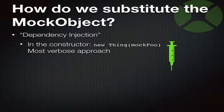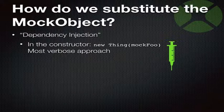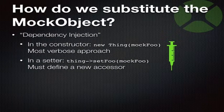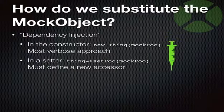Constructor injection is the clearest approach, but it's also the most verbose because you always have to pass it as an argument, and it can feel weird. The approach I've seen most often is a setter, where you say: let's set your database to this. It means you must define a new accessor, but it can be cleaner because you don't see this parameter passed every time you construct the object.